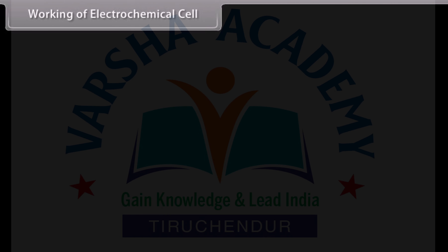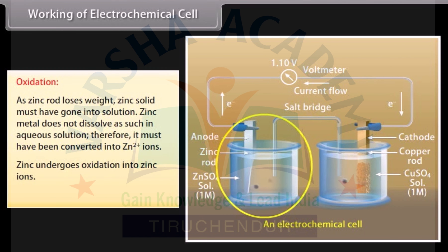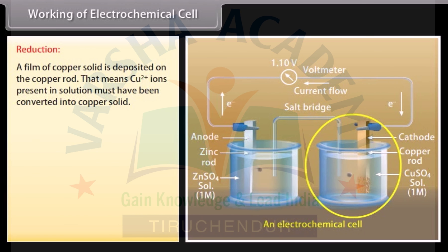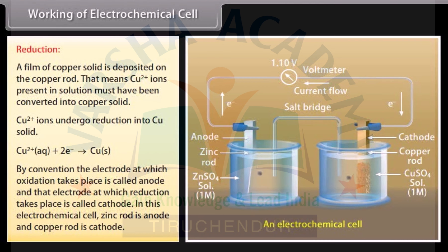Working of the electrochemical cell — Oxidation: As the zinc rod loses weight, zinc solid must have gone into solution. Zinc metal is converted into zinc ions; zinc undergoes oxidation. Reduction: A film of copper solid is deposited on the copper rod, meaning copper ions in solution are converted into copper solid; copper ions undergo reduction. By convention, the electrode at which oxidation takes place is called the anode, and the electrode at which reduction takes place is called the cathode. In this cell, the zinc rod is the anode and the copper rod is the cathode.